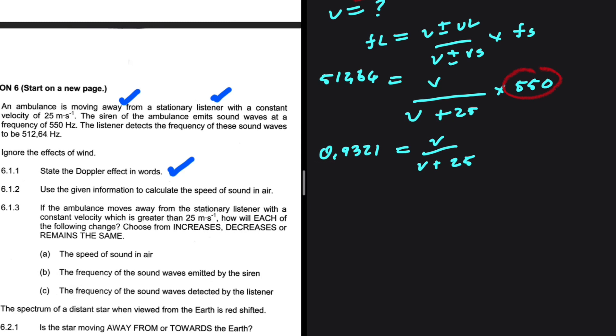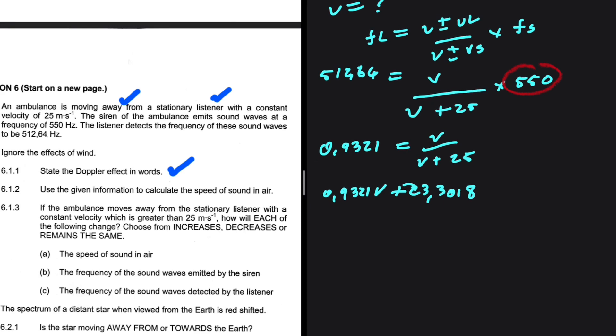And now I want to go ahead and cross multiply. V multiplied by 0.9321 will be 0.9321 V. And now I have 0.9321 multiplied by 25. That is going to be plus 23.3018. I'm rounding off to four decimal places because I'm not at the final answer. At the final answer, I'm going to round off to two decimal places. And then V multiplied by 1, it is just V. If I take 0.9321 V to the right-hand side, I'm going to have 1 minus 0.9321, which is 0.0679. So I have 23.3018 being equals to 0.0679 V.